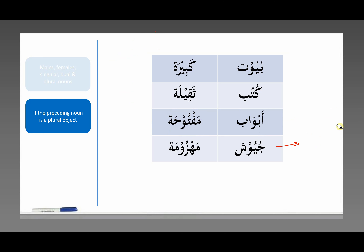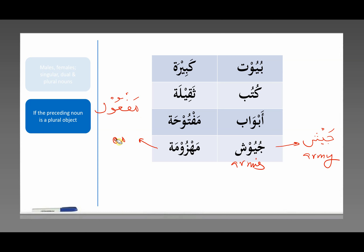Juyush — juyush is the plural of jaysh. Jaysh is an object — an army. Juyush means armies. Mahzuma — just like maftuha, on the maf'ul pattern, a very common adjective pattern. Mahzuma is from mahzum, which means vanquished, defeated, beaten in battle. If you want to say vanquished armies, you would say juyush mahzuma — with a ta marbuta, as if we're referring to a female singular person, but we're referring to plural objects.